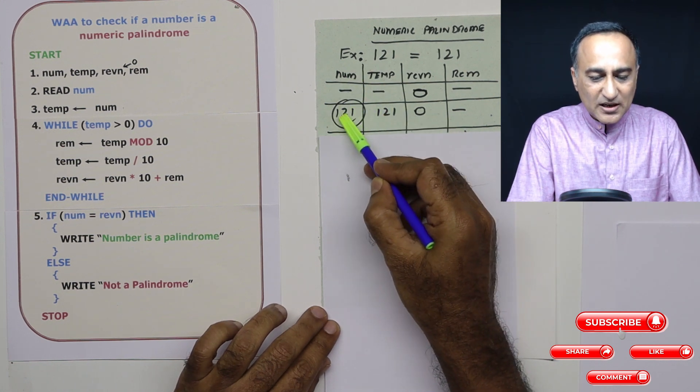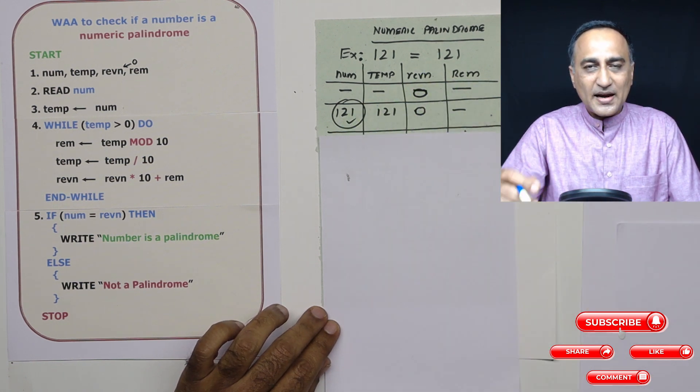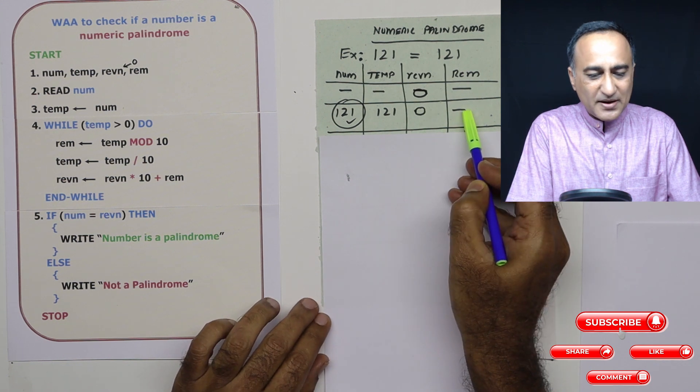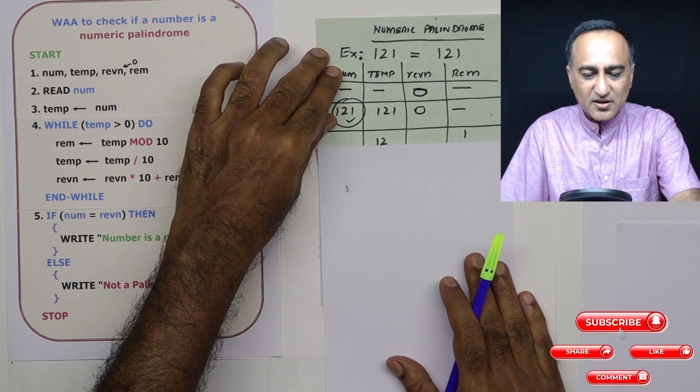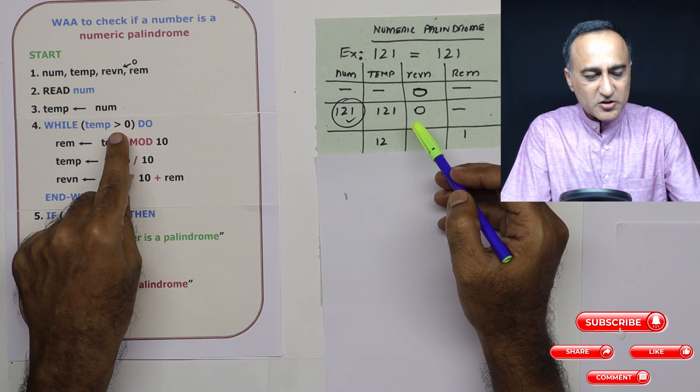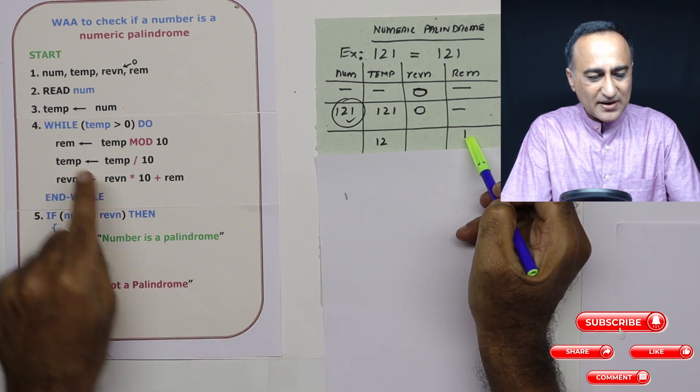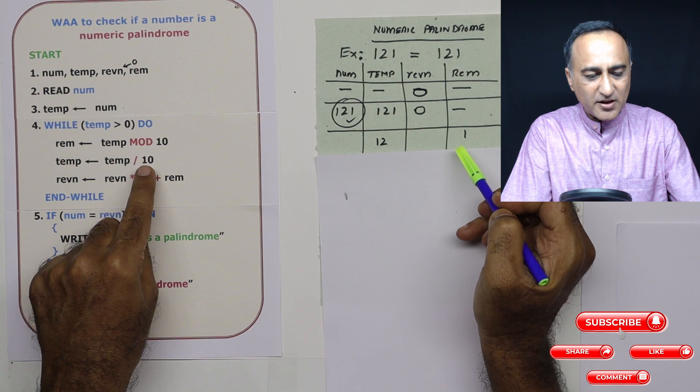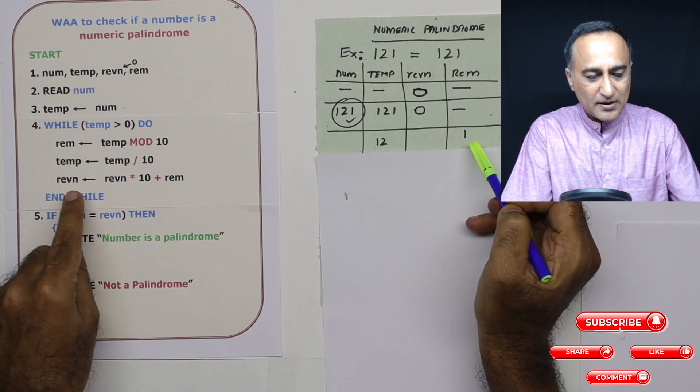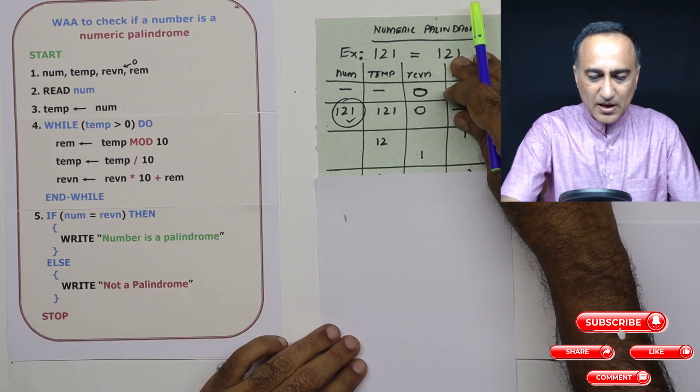Then reverse number is still zero. I have not given remainder any value. Nothing has changed in reverse number or remainder. Now what I'm doing here is 121 is greater than zero—it is true. Temp 121 mod 10. So remainder is 1. Now temp is 121 divided by 10, the quotient is 12. So temp is 12. The new value of temp is 12, remainder is 1. What is reverse of a number now? Zero times 10 is zero plus remainder 1. So reverse of a number at this stage is 1.